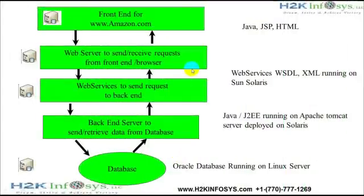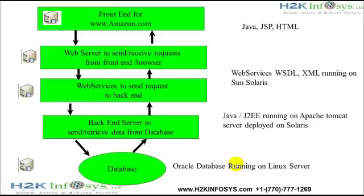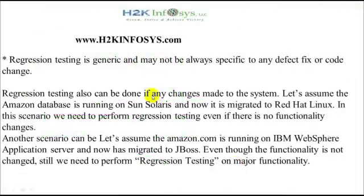Let's look at a brief architecture of Amazon.com. The front end uses Java, HTML, and JSP, running on web services middleware technology. The backend uses Java, JTV, and a database or cloud database running on a Linux machine. Regression testing is generic and may not always be specific to any defect fix or code change.